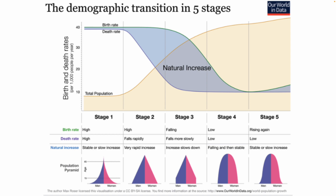No country is in Stage 1 anymore, but many of the poorest countries look like they've just left it and are technically in Stage 2. A Stage 2 pyramid will look more like a classic triangle — no country is perfect, but there may be a tiny bit of curvature based on life from just 10–20 years ago. People are still having the same number of babies because they haven't yet realized that more of their kids will now survive past age five. Access to reproductive health care in a Stage 2 country is still usually pretty low.